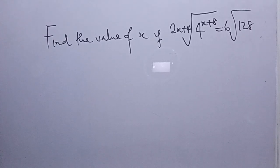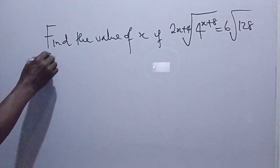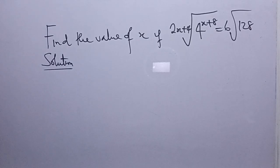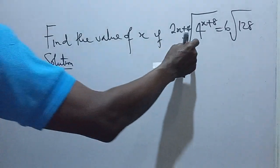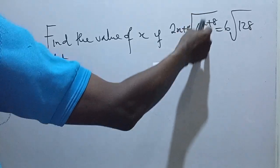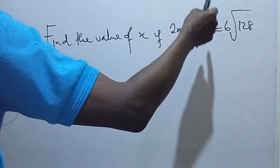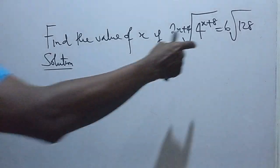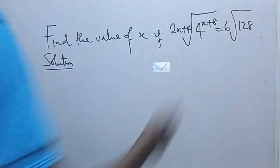Hello, I want to find the value of x in this expression. So let's look at how this expression can be defined. The expression is 2x plus 4, root of 4 to the power x plus 8, is equal to the 6th root of 128.